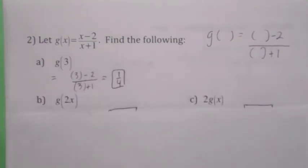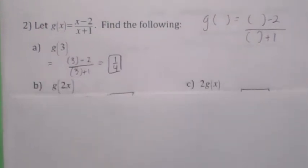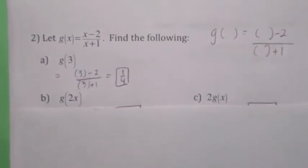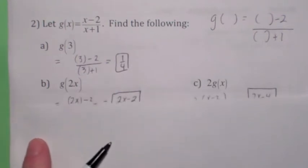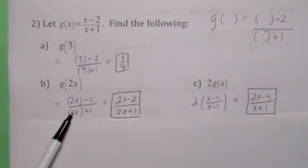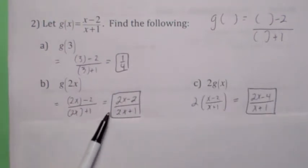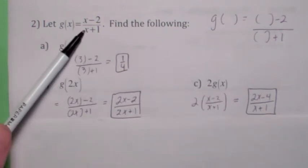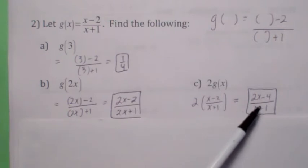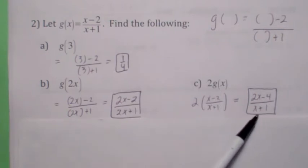Let's look at the difference between g of 2x and 2 times g of x. g of 2x, you just plug in 2x everywhere there's an x, and so you end up with 2x minus 2 over 2x plus 1, but 2 times g of x, you're taking the whole function, you're just multiplying it by 2. So when you multiply the numerator by 2, you get this.